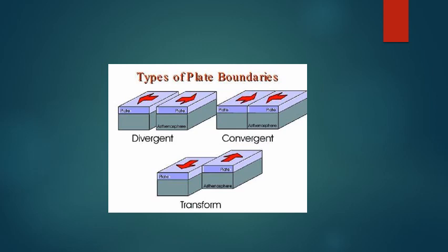Tectonic plates include the oceanic crust as well as the continental crust, which moves over the upper mantle — the asthenosphere. As a result of plate movements, whenever the plates slip past each other or collide against each other, their edges produce faults along the line of weakness. Faults are huge cracks or big fractures. Whenever these plates slide past or collide with each other, they result in earthquakes.